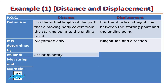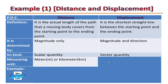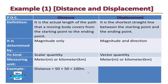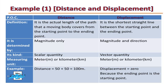Distance is a scalar quantity, while displacement is a vector quantity. Both are measured in meters or kilometers. For example: an object moves east a distance of 50 meters, then returns back to its original position — another 50 meters. This object covered 100 meters in total distance. But its displacement in this case is equal to zero, because the starting point and the ending point are the same, so the distance between them is zero.